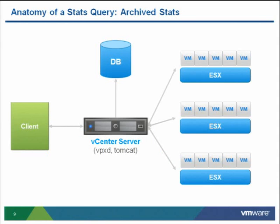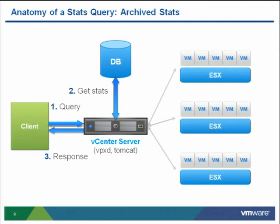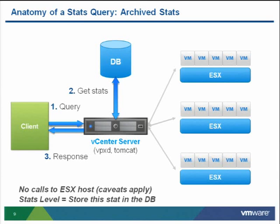For archive statistics — past day, week, month, or year — the client sends a request to vCenter, which satisfies it by going directly to the database, with no calls to the ESX host. Regarding stats levels: if a stat is documented at stats level 3 and you configure vCenter at stats level 3, that statistic will be archived in the database. The higher the stats level, the more detailed information and the more data gets sent to the database.